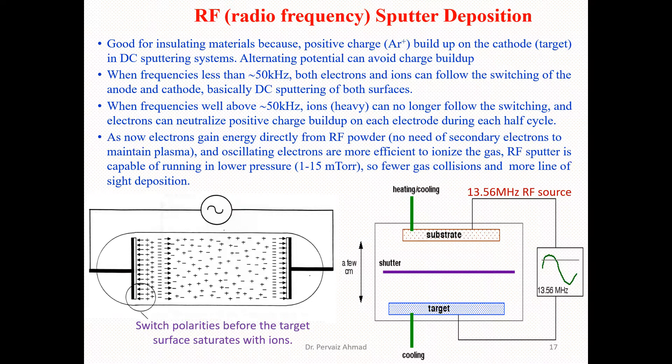Electrons can neutralize positive charge buildup on each electrode during each half cycle. Electrons get energy directly from the RF power, meaning there is no need for secondary electrons to maintain the plasma. Oscillating electrons are more efficient at ionizing the gas; therefore RF sputtering is capable of running at lower pressures in the range of 1 to 15 millitorr, giving fewer gas collisions and more line-of-sight depositions.